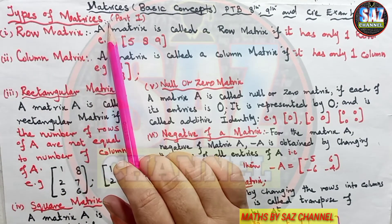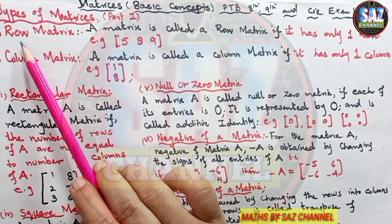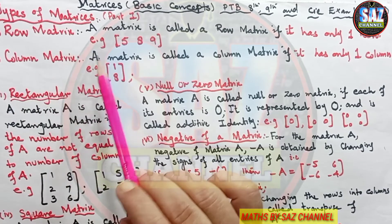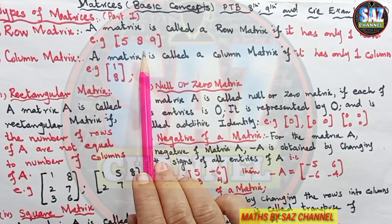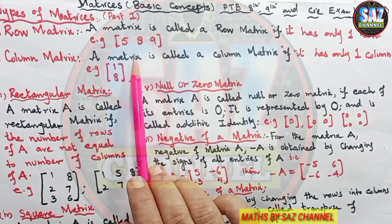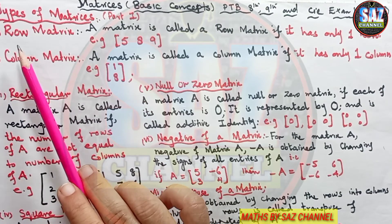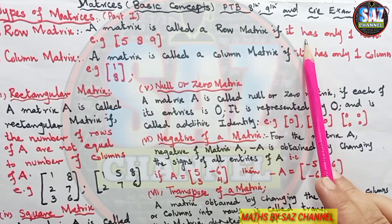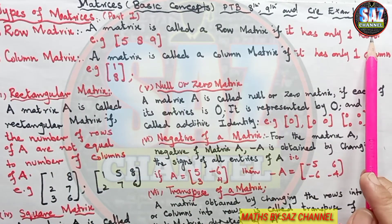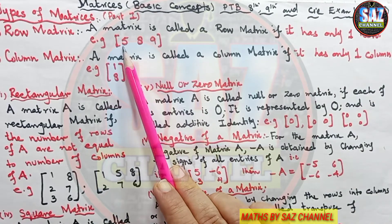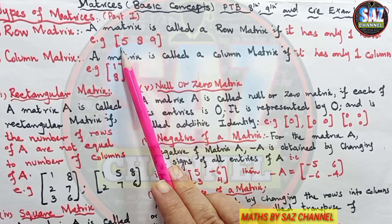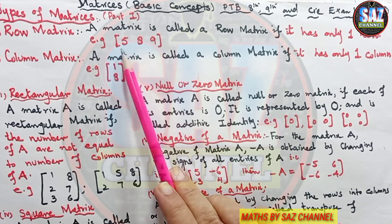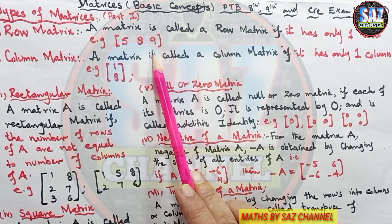First, we need to understand: when a matrix contains only one row, what is it called? A matrix is called the row matrix if it has only one row. For example, the elements 5, 8, and 9 form only one row, making it a row matrix.